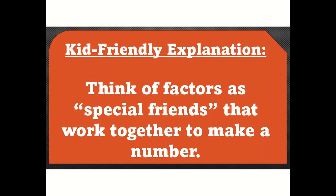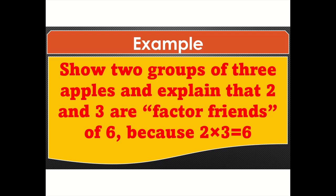Kid-friendly explanation: Think of factors as special friends that work together to make a number. Example: Show two groups of three apples and explain that 2 and 3 are factor friends of 6, because 2 times 3 equals 6.